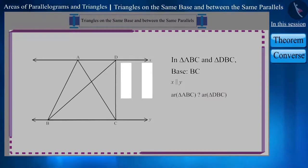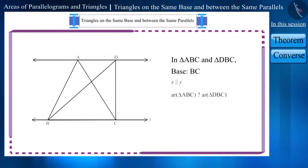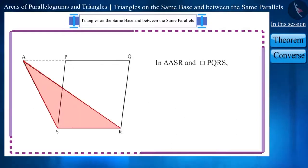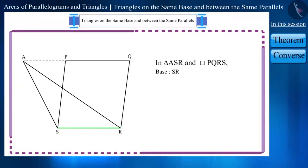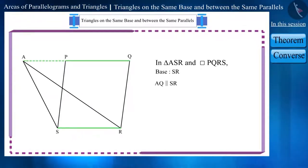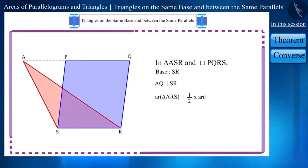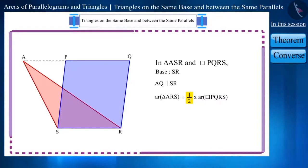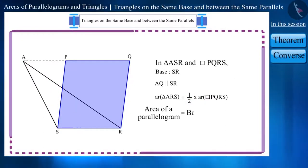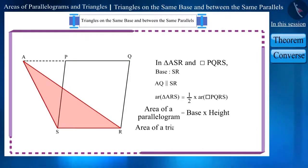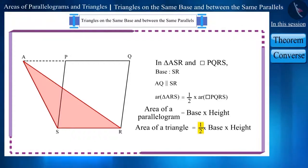You can pause the video and think about this. We know that if a triangle and a parallelogram are situated on the same base and between the same parallel lines, then the area of the triangle will be 1/2 times that of the parallelogram. The formula of the area of a parallelogram is base multiplied by height, so the area of a triangle would be 1/2 of the result.